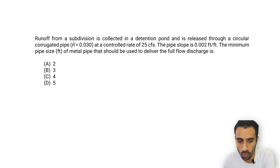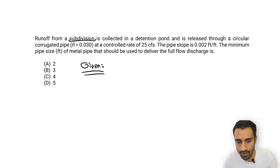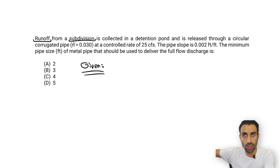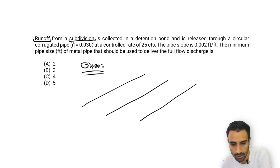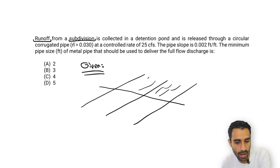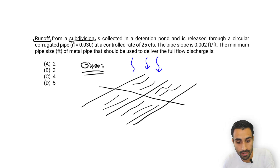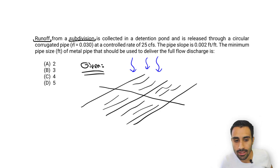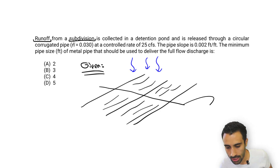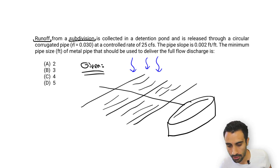Let's look at what we're given and visualize this. We have a subdivision, and runoff is the water that runs off after a rain event. We develop the subdivision — put houses, put roads. When we have a rain event, water runs off and we often put it in a detention pond placed downstream. So we visualize a pond that takes in that runoff water.